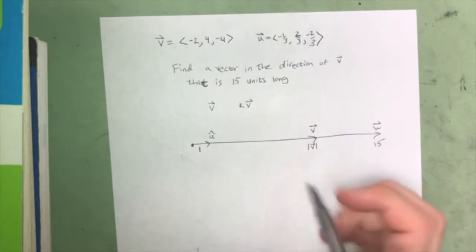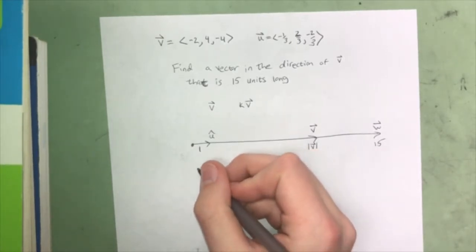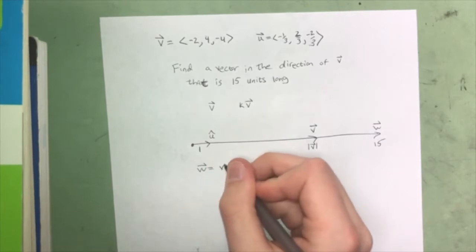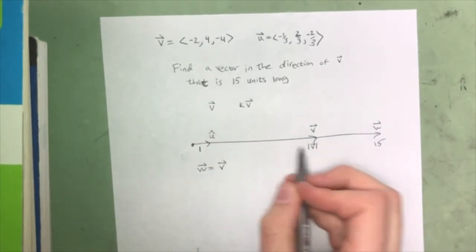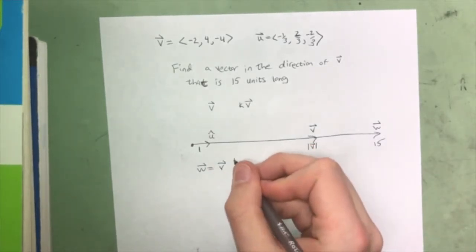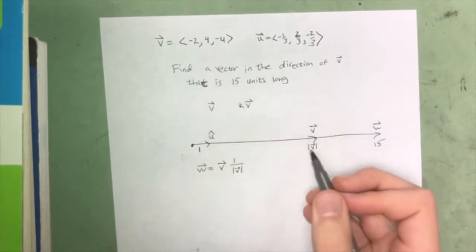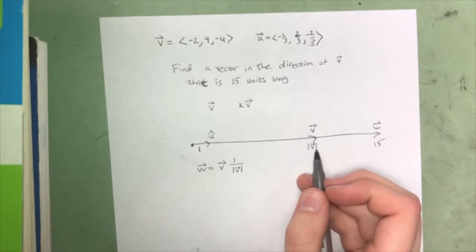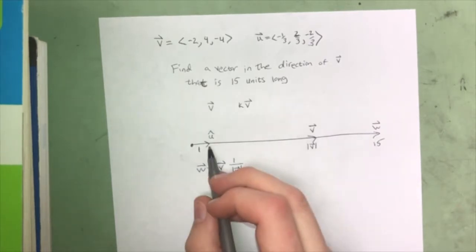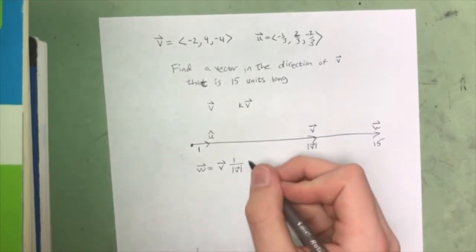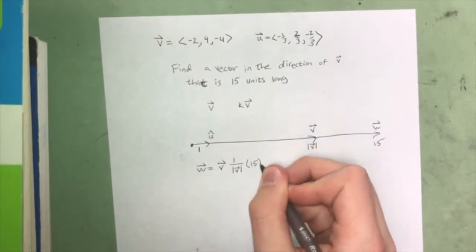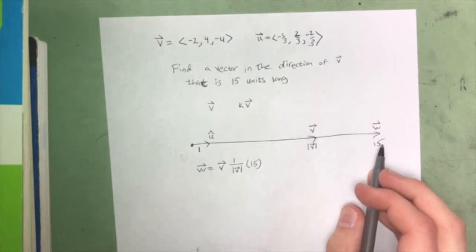the unit vector v, then we divide by the magnitude, which is written as 1 over the magnitude of v, so that decreases the length of this by a factor of v, which gives us the unit vector. And then we multiply that by 15 because we want to expand that out again to the length of w.